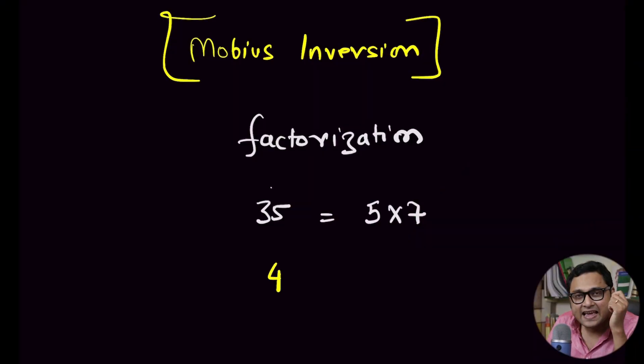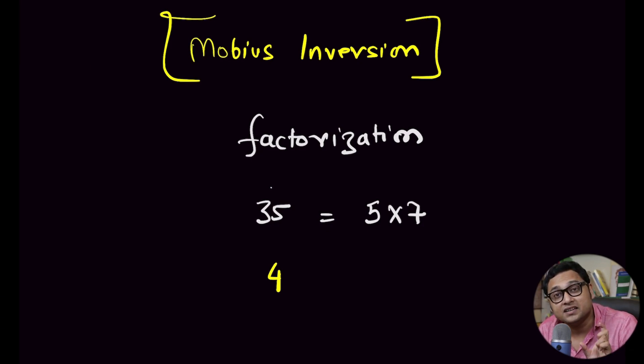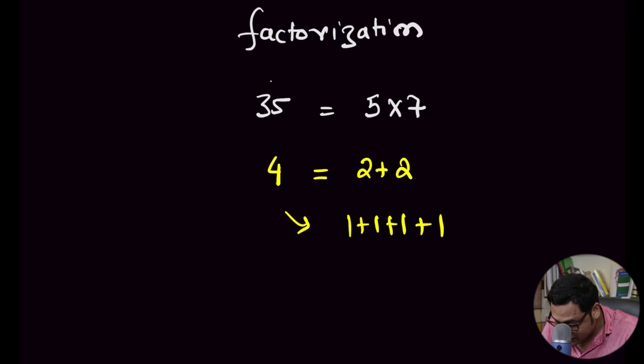This may not work only with multiplication — you can also add stuff. This is called additive factorization, or sometimes called partition. For example, you can factorize 4 as 2 plus 2. There are actually multiple ways of doing it: 1 plus 1 plus 1 plus 1, or 3 plus 1. So there are quite a few ways of factorizing 4 in terms of addition. This is also known as the partition problem.